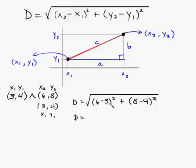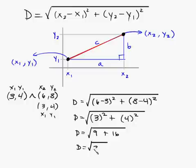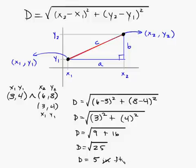So d equals the square root of 3 squared plus 4 squared, which is the square root of 9 plus 16, which is the square root of 25. Since we're talking about a positive distance, d equals 5 — not plus or minus 5, just 5. If the units were inches, feet, or miles you'd write that unit; in this case there's no unit.